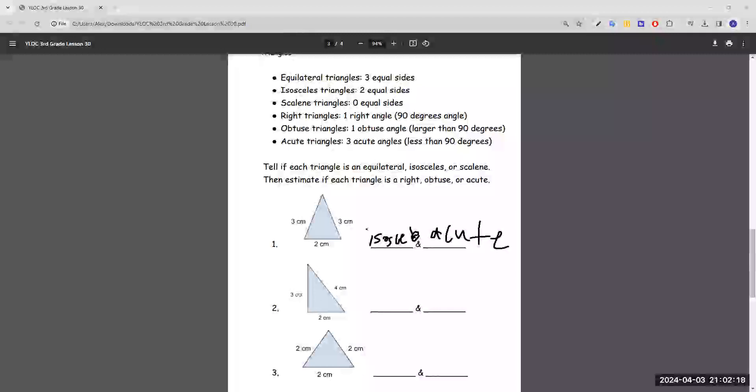Number two, one side is three centimeters, one side is four centimeters, and the other is two centimeters. So there's zero equal sides. And over here it tells us that's scalene. So scalene.